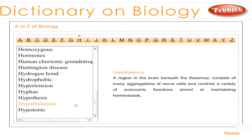Hypothalamus: a region in the brain beneath the thalamus; consists of many aggregations of nerve cells and controls a variety of autonomic functions aimed at maintaining homeostasis.